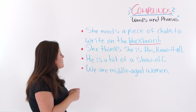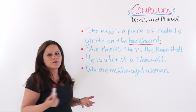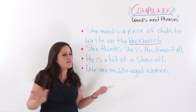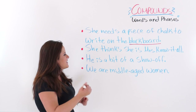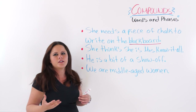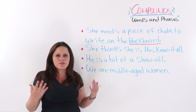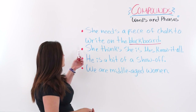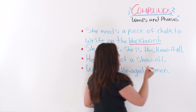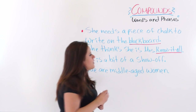The next one says: 'She thinks she is Mrs. Know-it-all.' A know-it-all is when somebody thinks they know everything. It is like an idiomatic expression to say that you are a person who thinks they know it all. So she thinks she is Mrs. Know-it-all — it is a compound, but it is a compound phrase.